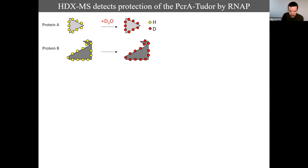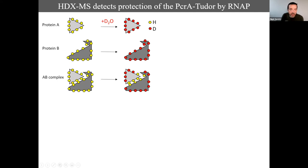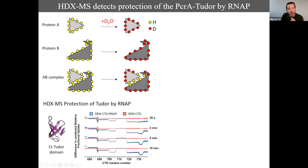There are other proposed roles for PcrA or UvrD in transcription — including helping resolve or avoid replication conflicts with transcription. To understand how PcrA interacts with RNA polymerase, Inigo used hydrogen-deuterium exchange mass spectrometry. In HDX-MS, a protein prepared in hydrogenated water is incubated in deuterated water; regions protected by protein-protein interactions show slower exchange, revealing interaction surfaces.